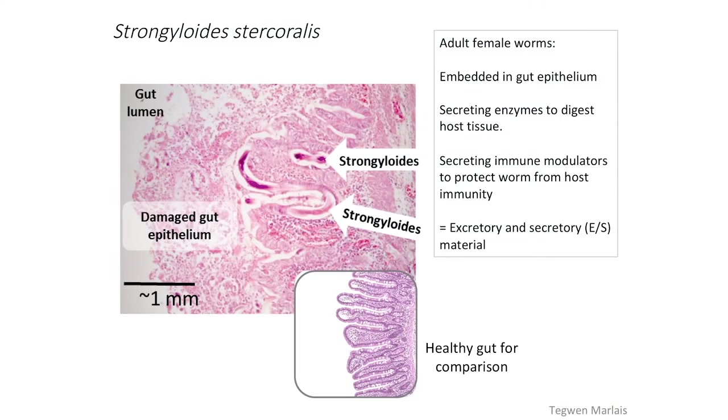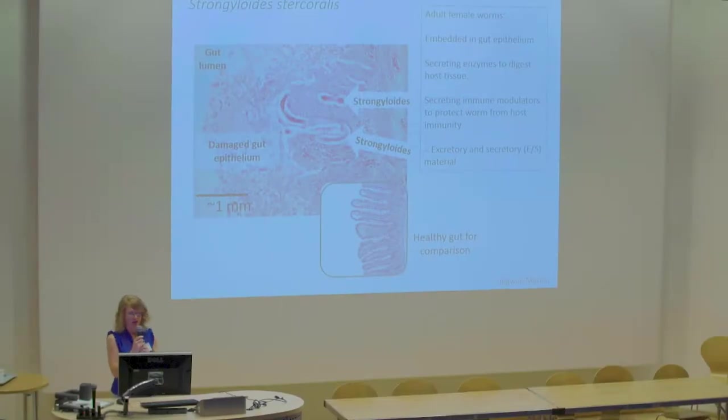You can see the S-shaped curve — that's the adult female embedded in the epithelium of the small intestine. It's causing quite a bit of damage to the epithelium, and while it's in there it is secreting enzymes to digest the host tissue, as well as immune modulators to protect itself from the host, and excreting its own waste products. The beginning of my study was based on the hypothesis that some of this excreted and secreted material would end up in the lumen of the gut and therefore could be detectable in stool.